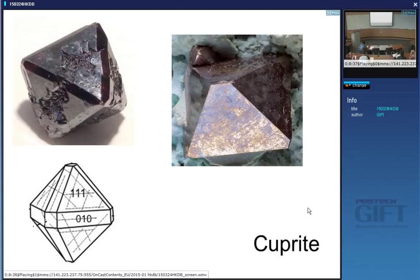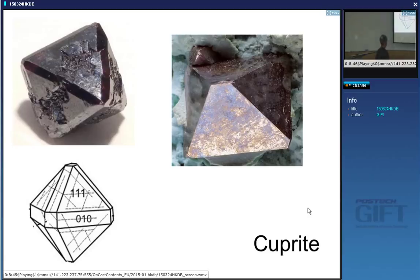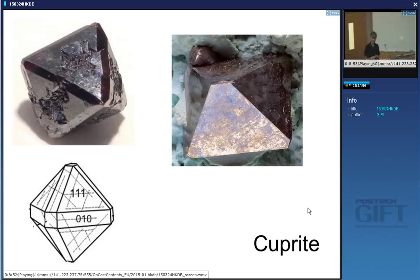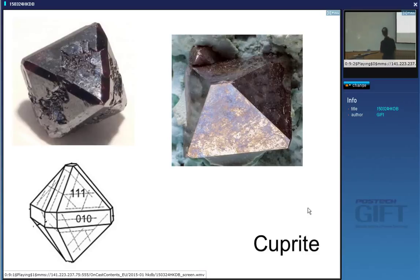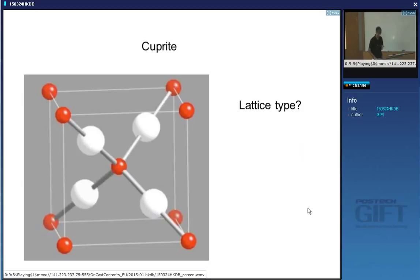By looking at the shape, with fourfold symmetry and body diagonal planes (111 planes), you can immediately tell it should be cubic. The symmetry tells you that. Normally you would measure angles, but just looking at an image it's okay to reason this way. So this is copper oxide Cu₂O, and we know from the shape that it is cubic.